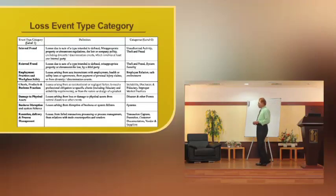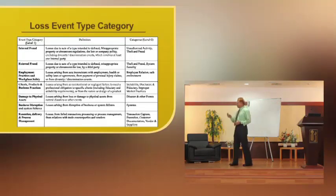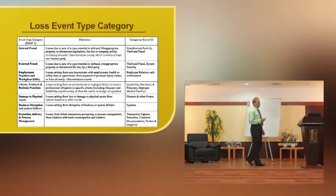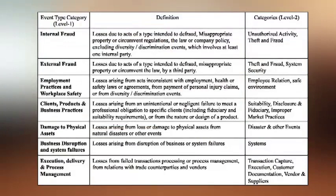Operational risk events are categorized into seven types: internal fraud, external fraud, employment practices and workplace safety, clients/products and business practices, damage to physical assets, business disruption and system failures, and execution/delivery and process management.